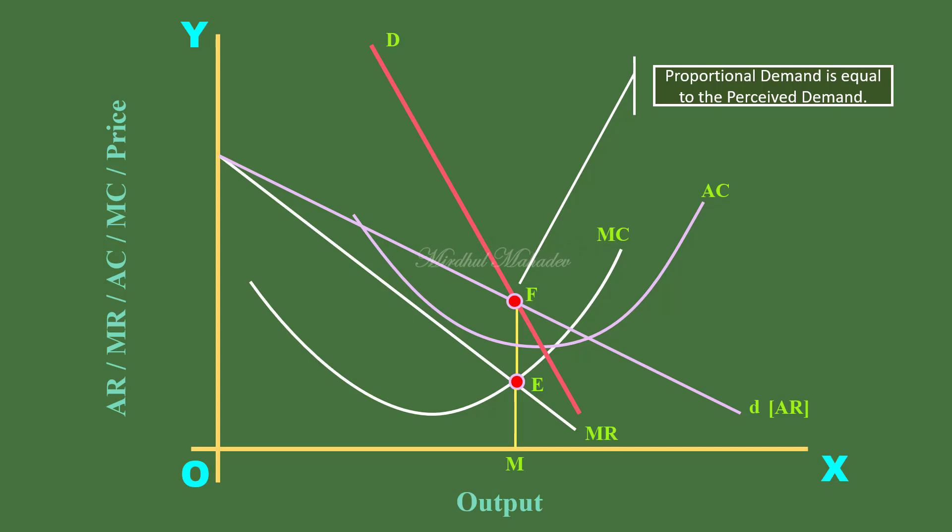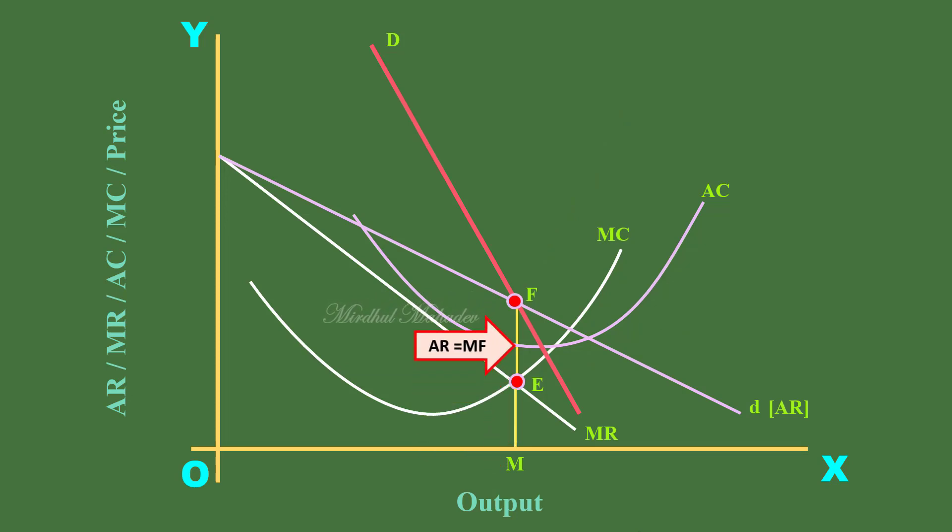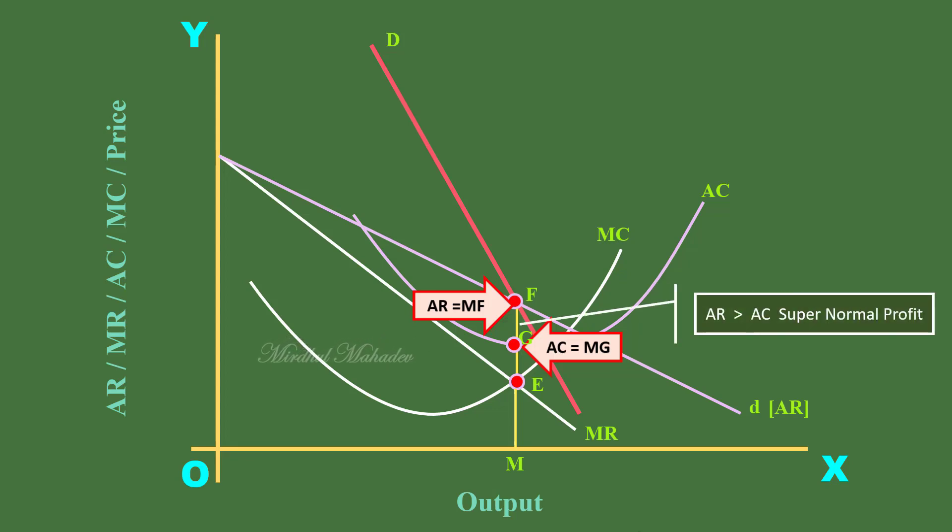When the firm produces M units of output, all the three equilibrium conditions are satisfied. Hence, the firm is in short-run equilibrium. Examine the average cost and average revenue. Its average revenue is MF. Its average cost is MG. MF is greater than MG. Average revenue is greater than average cost.